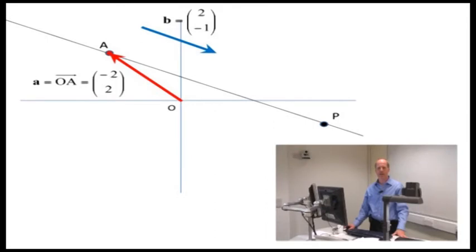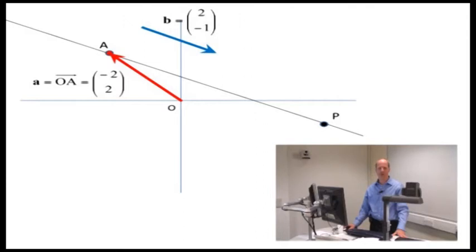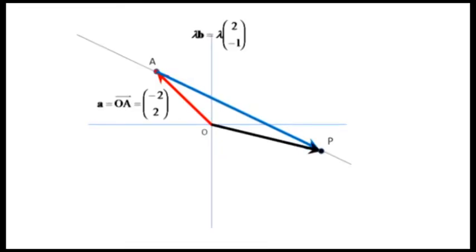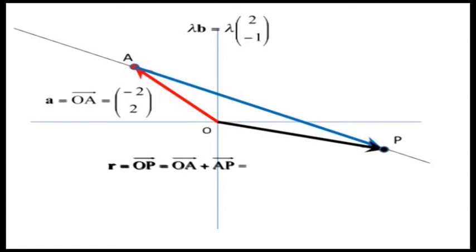Now the position vector of any other point P along this line can be formed from the vector sum of the position vector OA and the vector from A to P. Since AP is parallel to B, it must be a scalar multiple lambda of B, so that we can write the position vector OP in the form OA plus AP. This is called a parametric equation, since it involves a parameter lambda, whose value can vary from minus to plus infinity. Each value of lambda gives a particular point along the line.